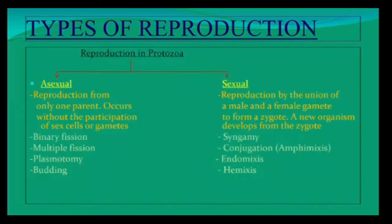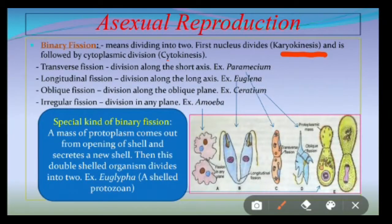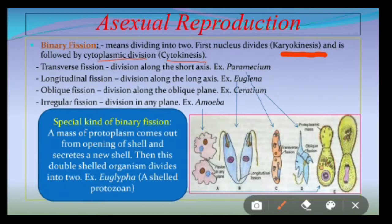Let us start asexual reproduction with the first method, which is binary fission. Binary means two, fission means division. Through binary fission, the parent cell divides into two. First, the nucleus elongates and divides — this process is called karyokinesis — followed by cytokinesis where the cytoplasm divides. Hence one parent cell divides into two daughter cells. This division generally takes place during favorable conditions. The nucleus divides amitotically into two daughter nuclei, which move to the poles, and then the cell constricts in the middle to form two daughter cells.